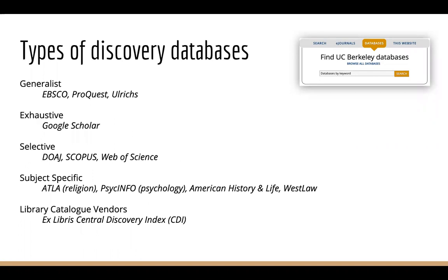There are a few different resources, and I wanted to share a broad outline of the various types of databases that are available. Generalist databases: EBSCO and ProQuest probably own the most databases overall, and if you supply them with your information, you'll be accessible in a huge number of resources. They compile academic databases as well as subject-specific ones. Ulrichs is a comprehensive directory of all types of periodicals. Exhaustive resources such as Google Scholar aim to cover as broad a range of content as possible. Selective: notably for the OA community, we have the Directory of Open Access Journals. Other examples are Scopus and Web of Science.